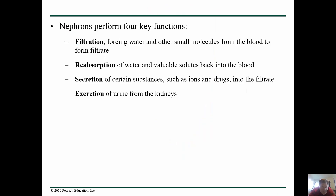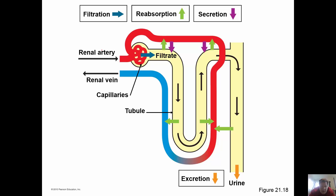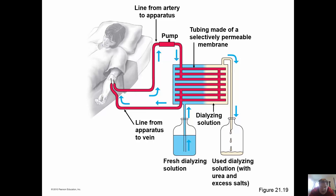The nephrons perform four key functions: filtration, reabsorption, secretion, and excretion. Our blood is filtered so we don't get blood in our urine, then this filtrate is selectively reabsorbed — good things like sugar are taken out — and secreted bad things like phosphoric acid are put in.